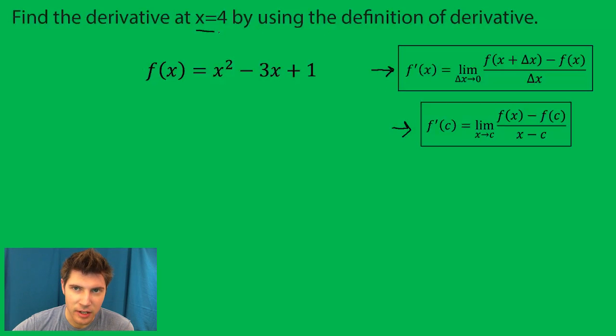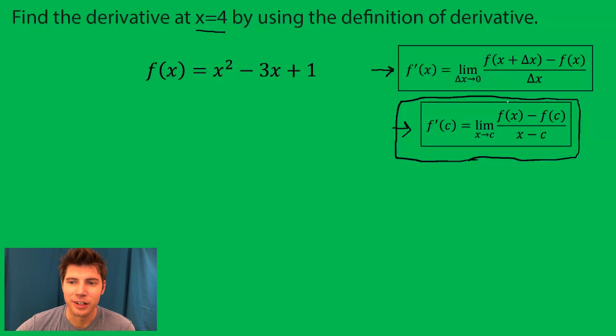Since the question said at x equals four, we want to find at a particular point. So we're going to use that one right there. Just copy down f prime of four because I'm plugging in four for C because that's what I'm finding when x equals four.